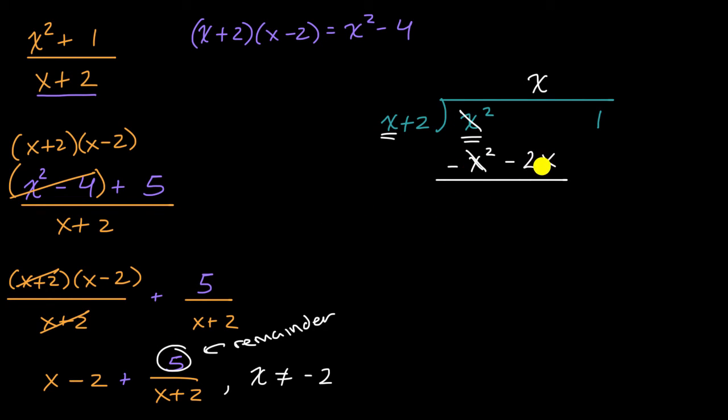And then I'm gonna be subtracting negative two x from, you could view this as plus zero x up here, plus one. And so you're left with negative two x. And then we bring down that one plus one.